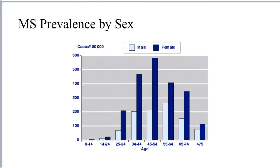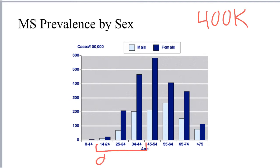MS currently affects about 400,000 people in the US. Most patients are diagnosed between the ages of 15 and 45, with peak incidence occurring between the ages of 30 and 40. Women are affected by MS twice as often as men, and the incidence is twice as high in individuals of Caucasian background.